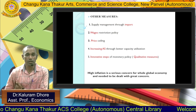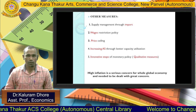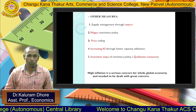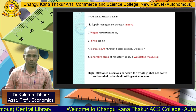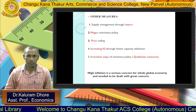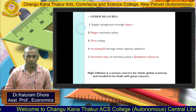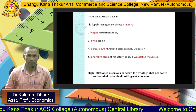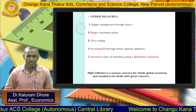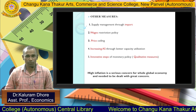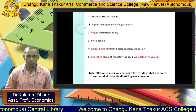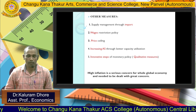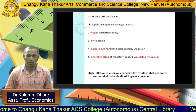Moving to other measures. First: supply management through imports — we should import whatever we require more of and not waste resources importing what we do not need. Second: restriction policy. If the government properly uses such a policy, they can definitely keep control on inflation through price-selling limits, which is another measure to control prices.